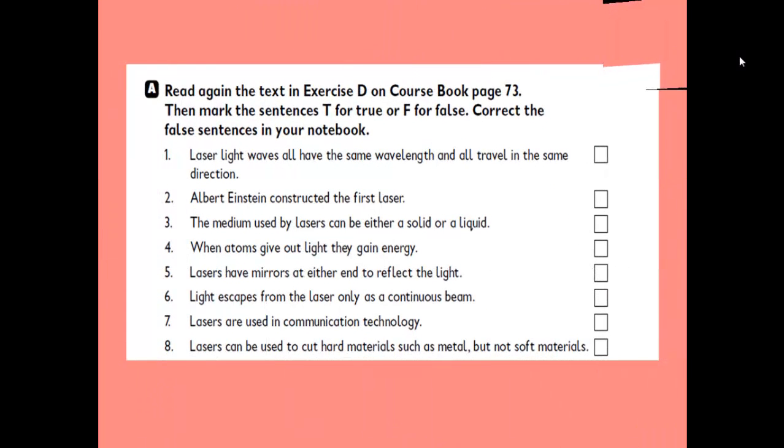Now, let's do something else. Let's move to our workbook and do exercise number A. Read again the text in exercise number D on course book page number 73. Then mark the sentences T for true or F for false. Correct the false sentences in your notebook. Let's read the sentences first of all.